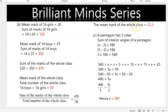A pentagon has five sides and the formula for the sum of interior angles is (n minus 2) times 180, so substituting gives 540 degrees. We sum all the angle values and set them equal to 540. Grouping like terms gives 490 equals 5x. Dividing both sides by the coefficient of x, which is 5, gives x equals 98 degrees.